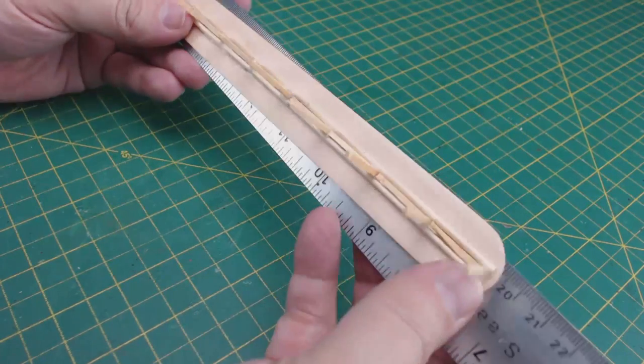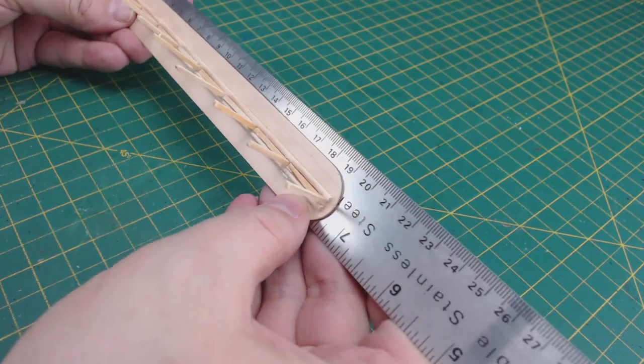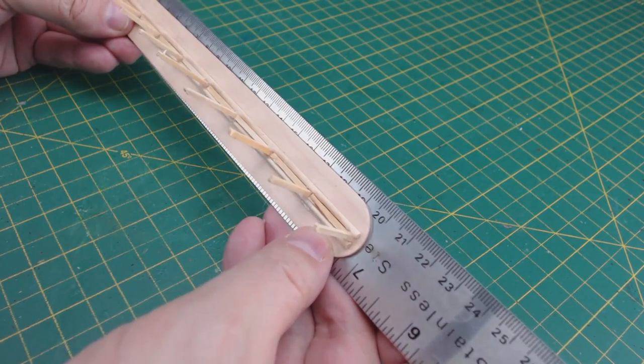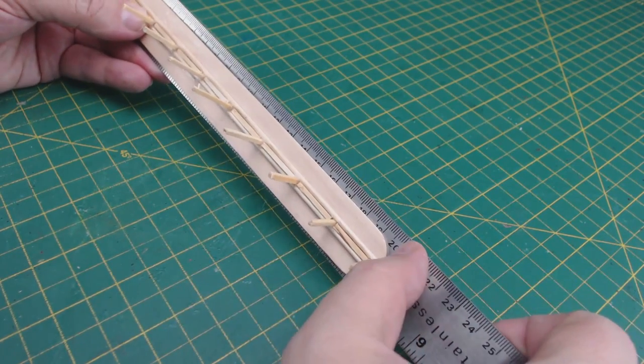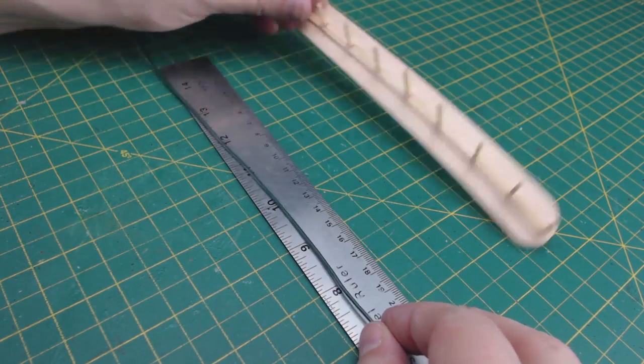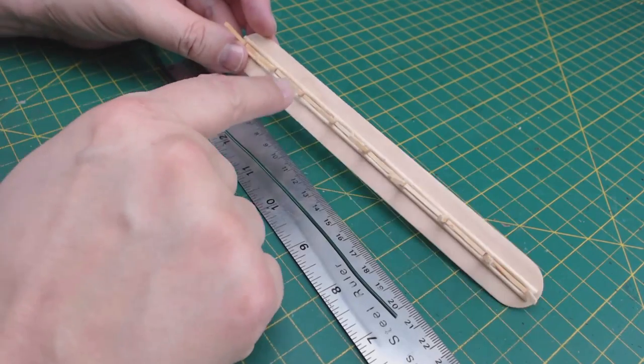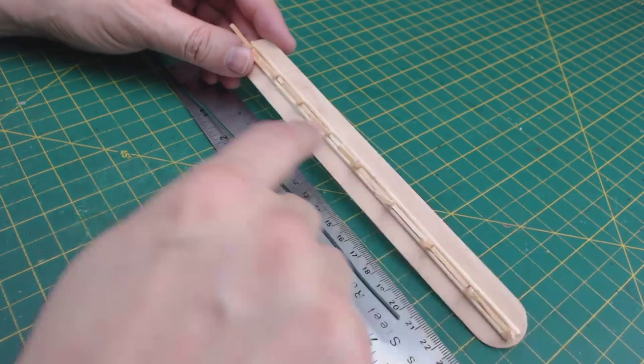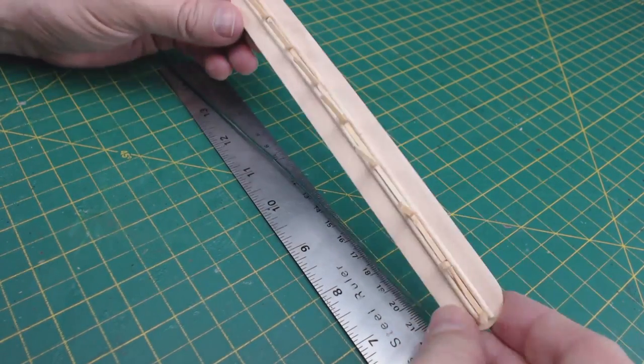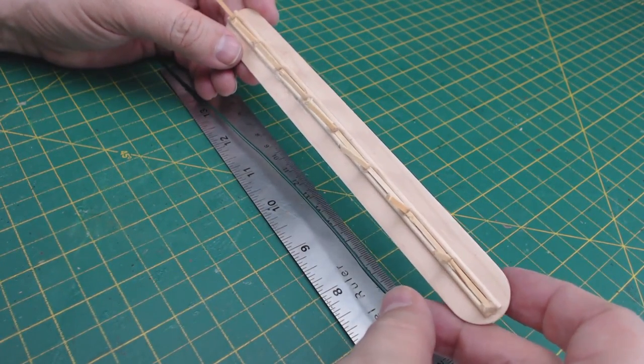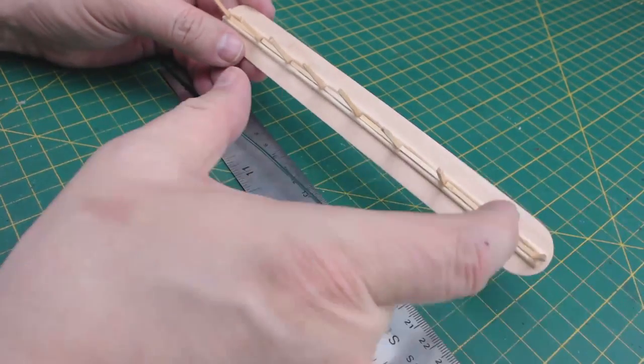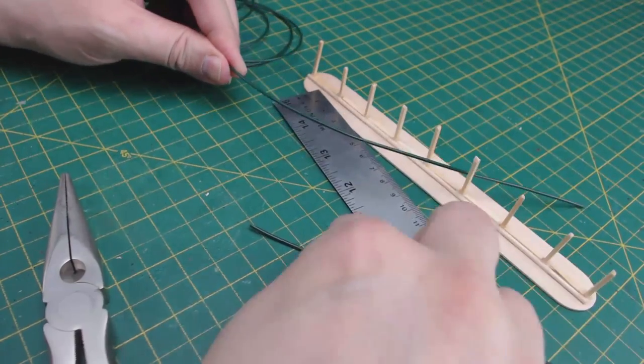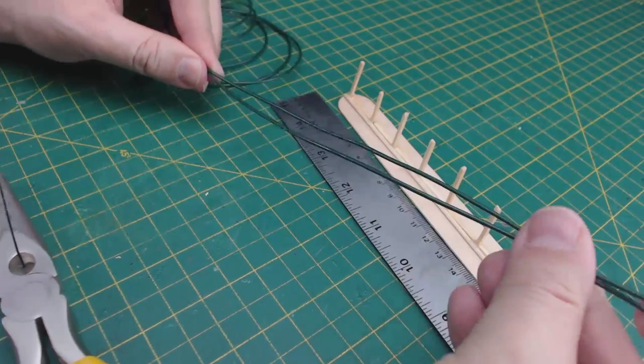We need to measure how much wire we're going to need. Our base is 20 centimeters long. That's about 7 and 3 quarters inches for our friends in the USA, Myanmar and Liberia. Now, we need a roughly equivalent length of wire. However, because we are weaving the wire between the fence posts, the wire should actually be longer. A length of 22 centimeters or 8 and a half inches should be long enough to weave the wire and wrap it around the ends of our fence. We really only need to measure the wire once, and then we use the wire to compare all subsequent lengths when we cut them.